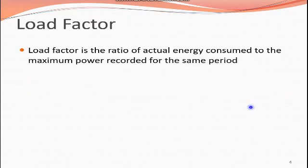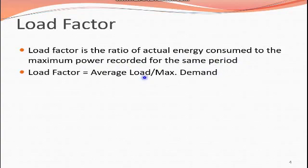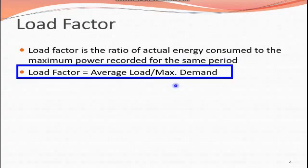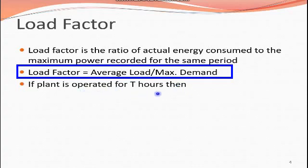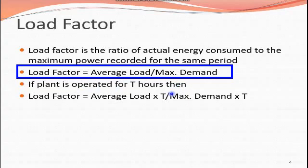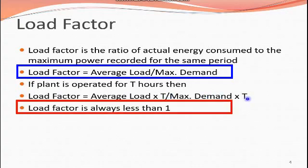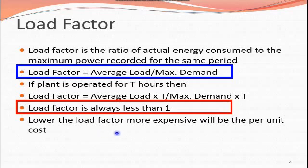Load factor is the ratio of the energy consumed to the maximum power recorded for the same period. Load factor equals average load divided by maximum demand. If the plant is operated for T hours, the formula becomes: average load multiplied by time period, divided by maximum demand multiplied by time period. The load factor is always less than one.